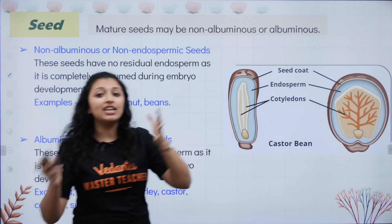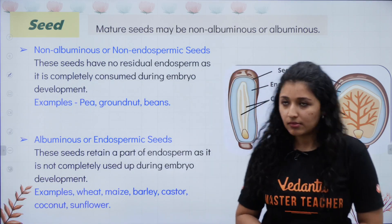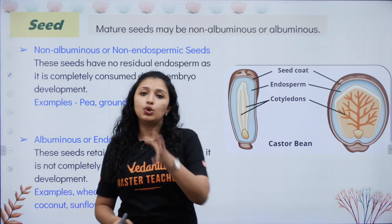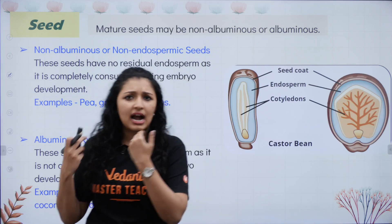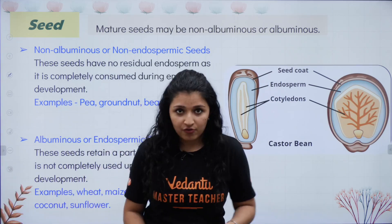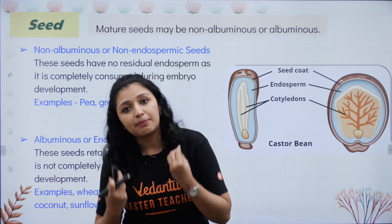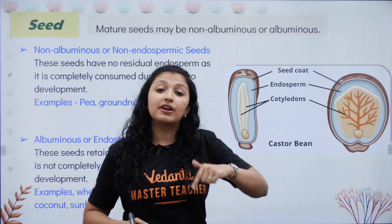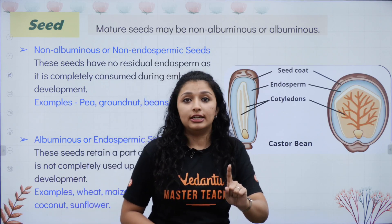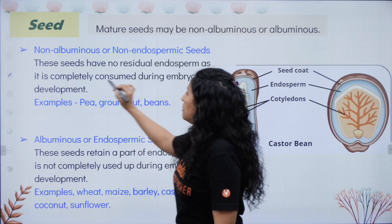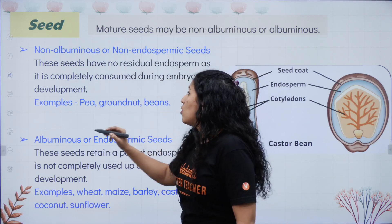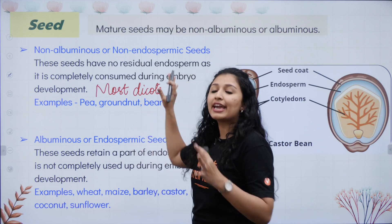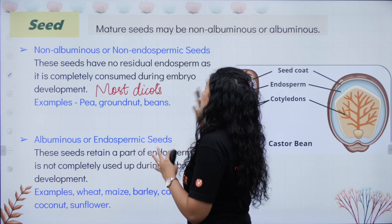Seeds are of two types: endospermic seeds and non-endospermic seeds. Non-endospermic seeds, also called non-albuminous seeds, have no residual endosperm — it is completely consumed during embryo development. Examples are most dicots.